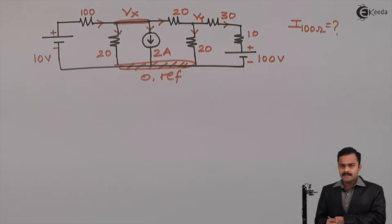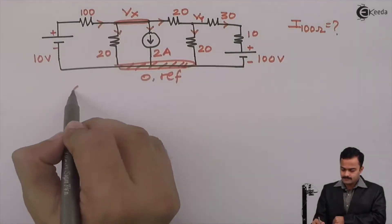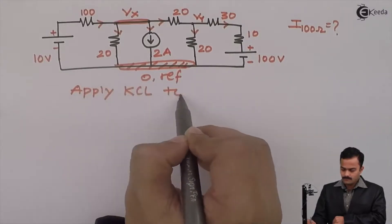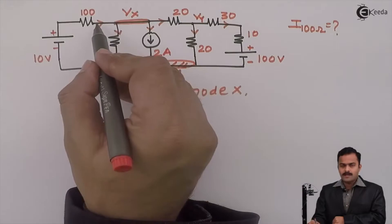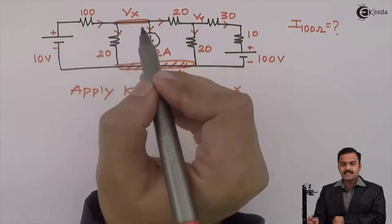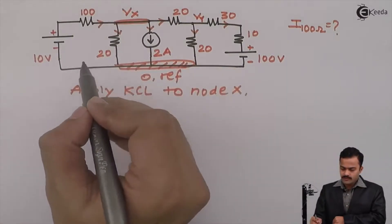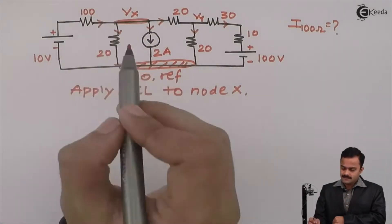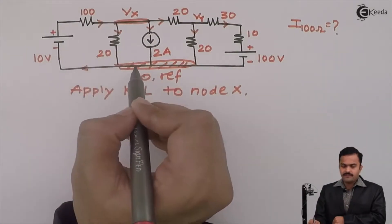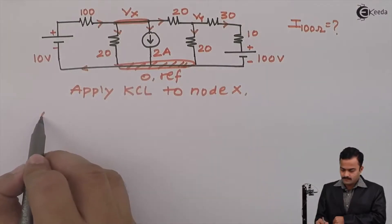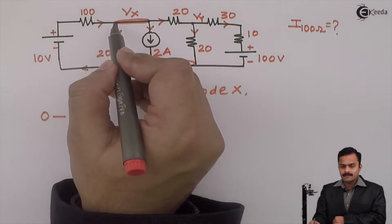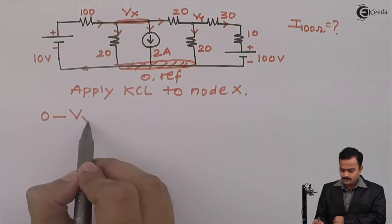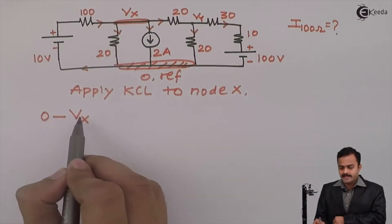Let's apply KCL to node X. For node X, I am having one incoming current and three outgoing currents. So equation for this incoming current. This current has started from reference and it is ending on X. So 0 minus Vx.